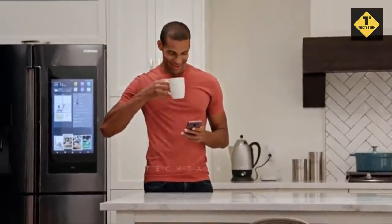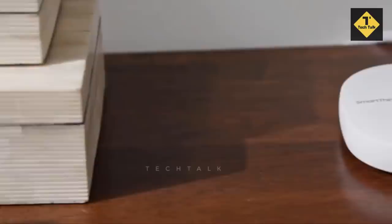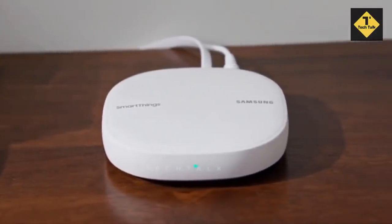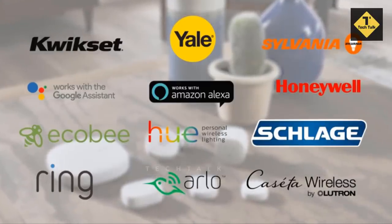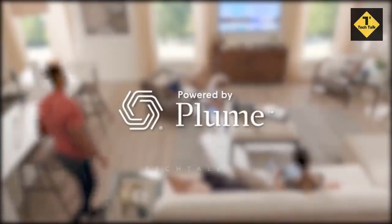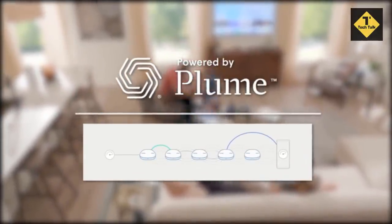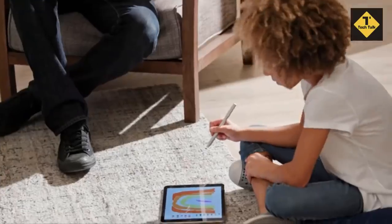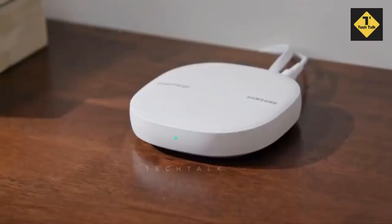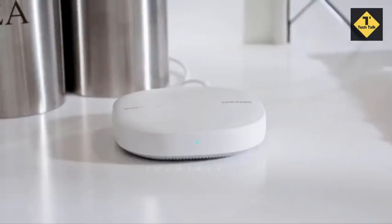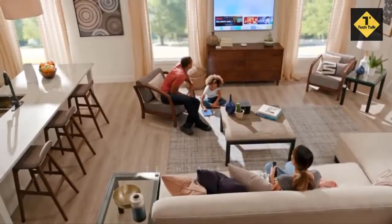Next on our list is Samsung Electronic CT Mesh Router. All-in-one solution. The only mesh router and smart home hub in one, allowing you to connect and control 100 plus compatible smart cameras, lights, speakers, doorbells, and more with the SmartThings app. Extendable coverage. Enjoy seamless coverage for up to 1500 square feet with a single router and up to four thousand five hundred square feet with a pack of three and up to 32 routers if additional coverage is needed.